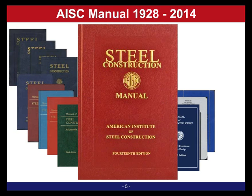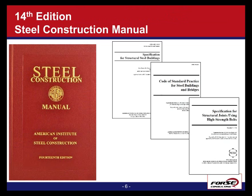The 14th edition manual has both the LRFD and ASD design methods in it. The manual itself has tables and all the helpful design information you're used to, and in addition it includes the Specification for Structural Steel Buildings — that's the AISC 360 — which contains the code requirements.